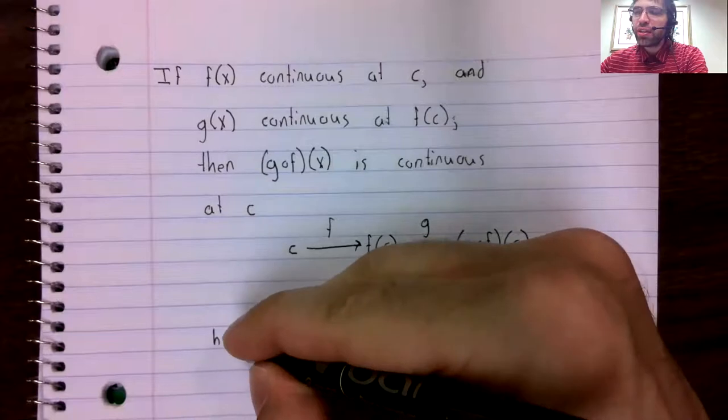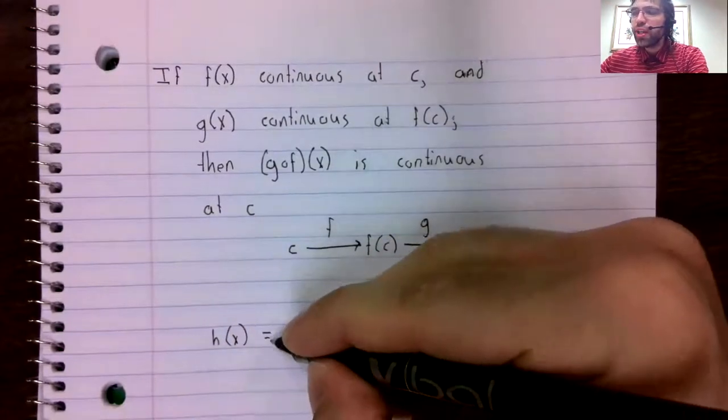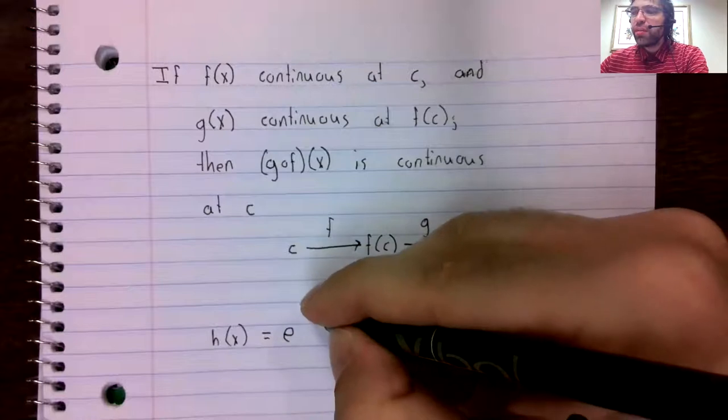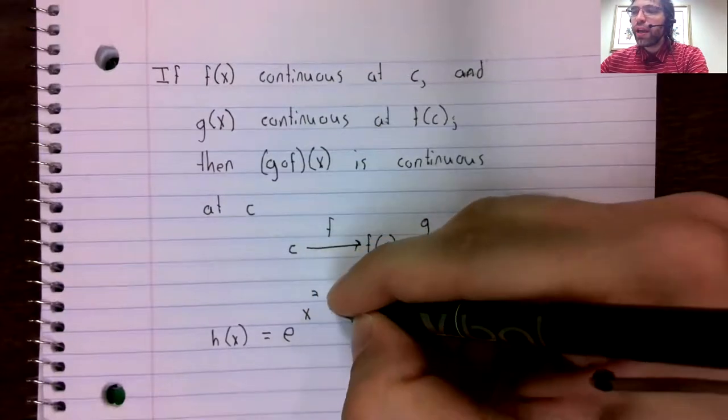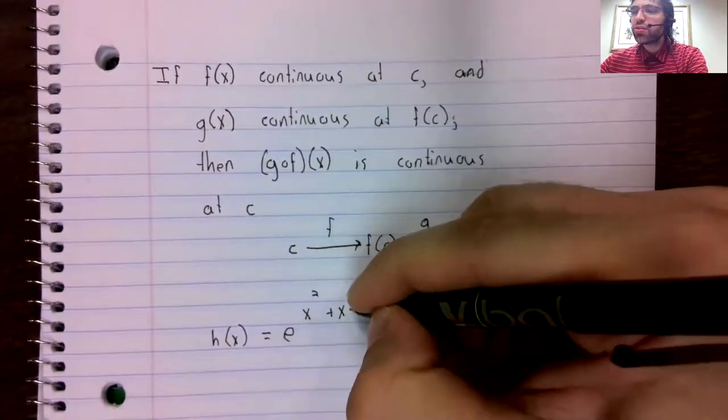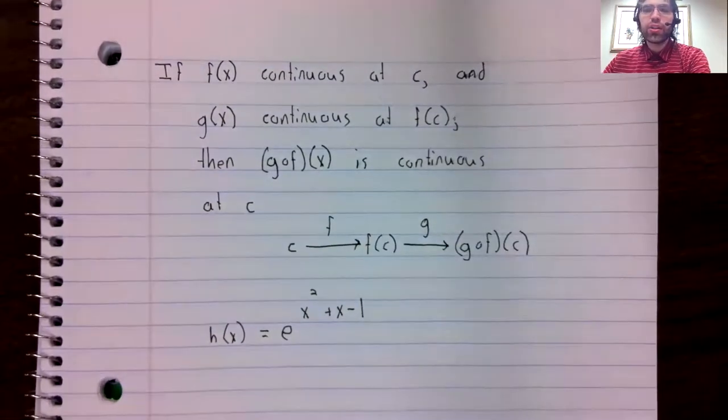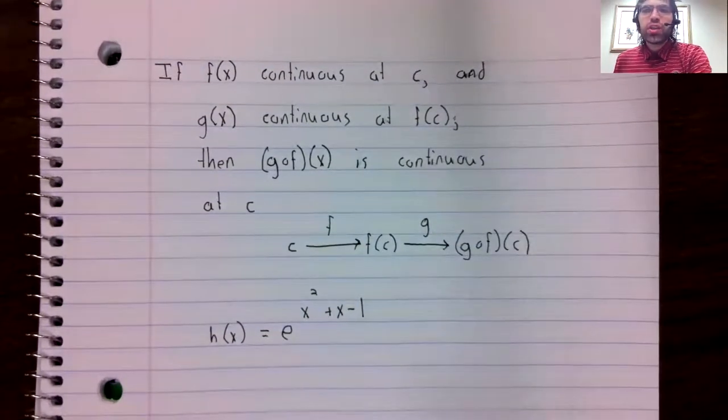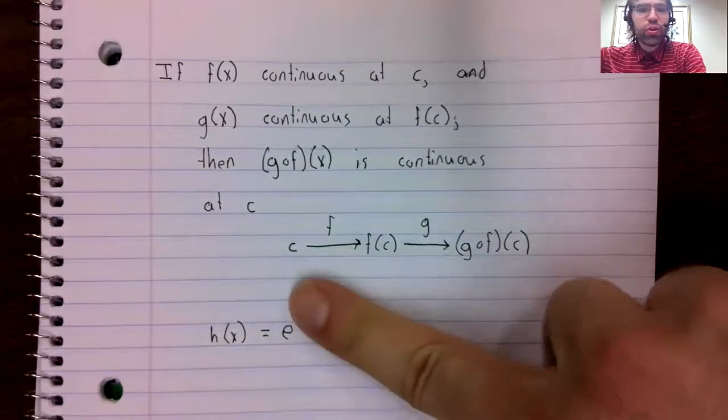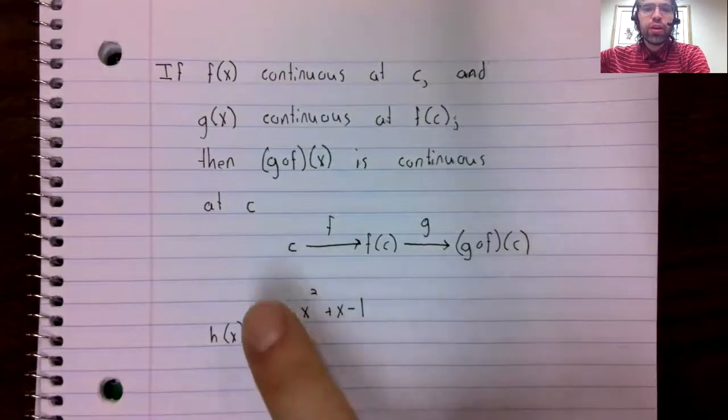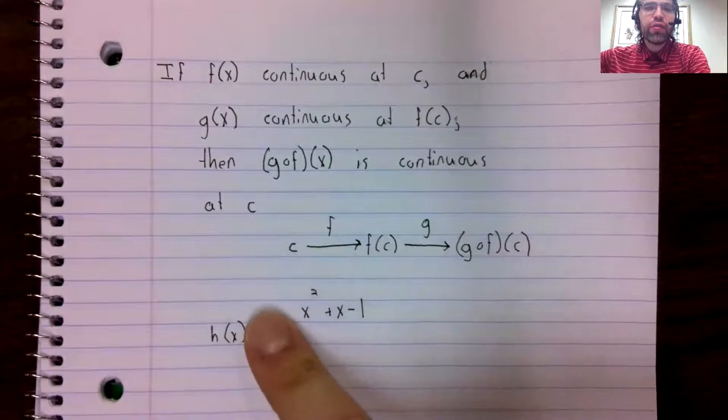Like if we look at h(x) equals e to the x squared plus x minus one, this is composition. It's the composition of the exponential function with this quadratic function.